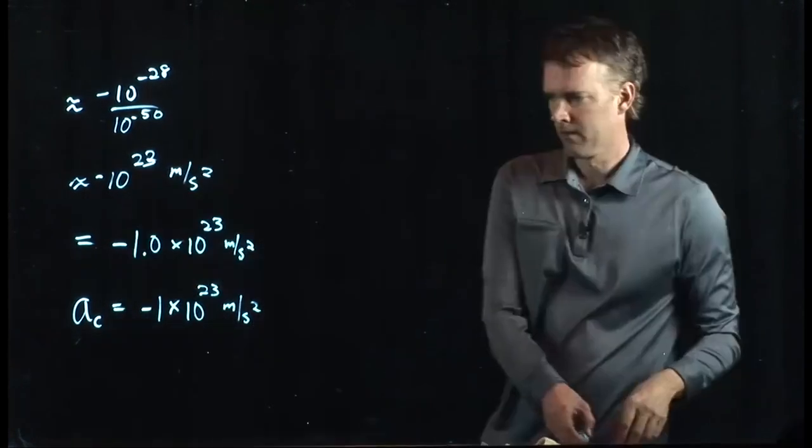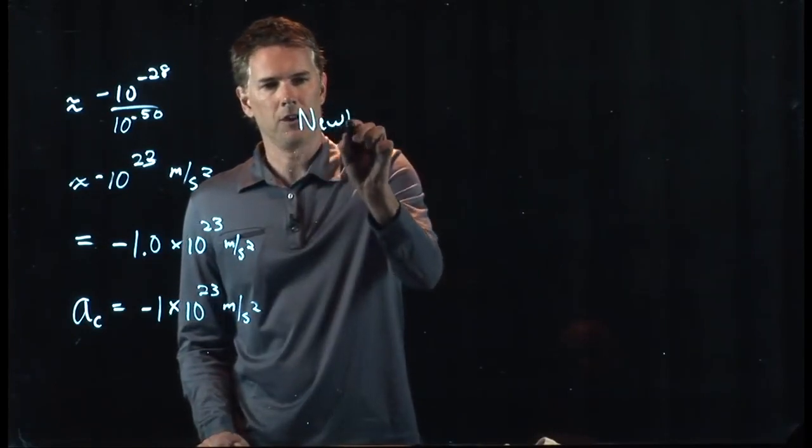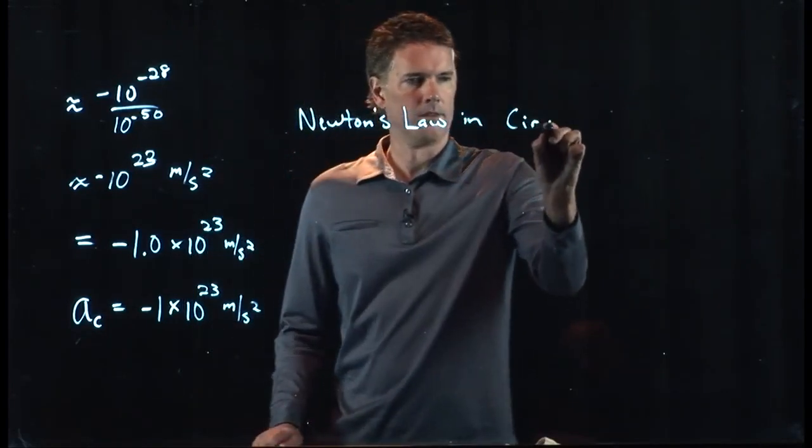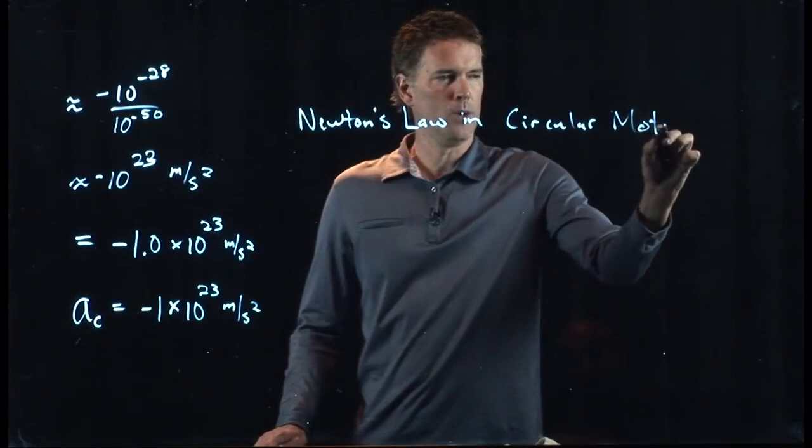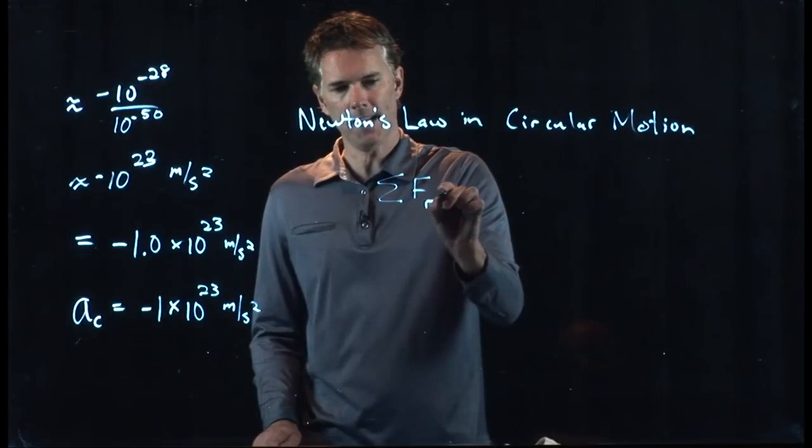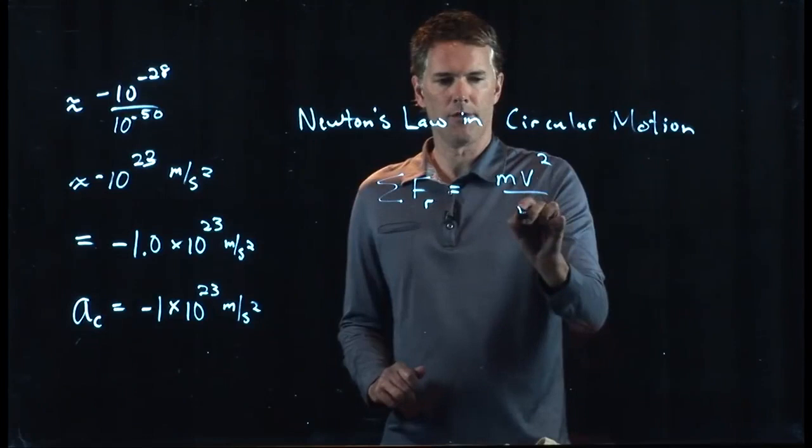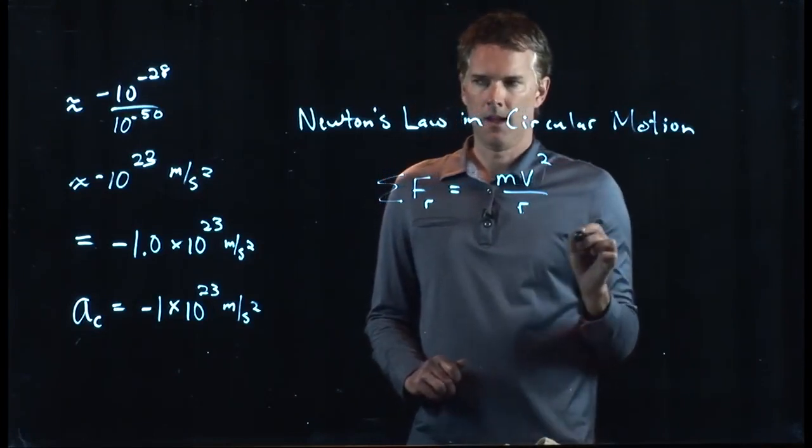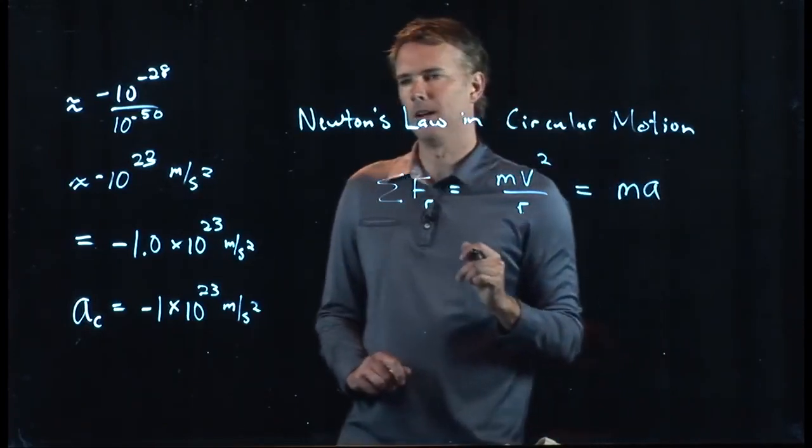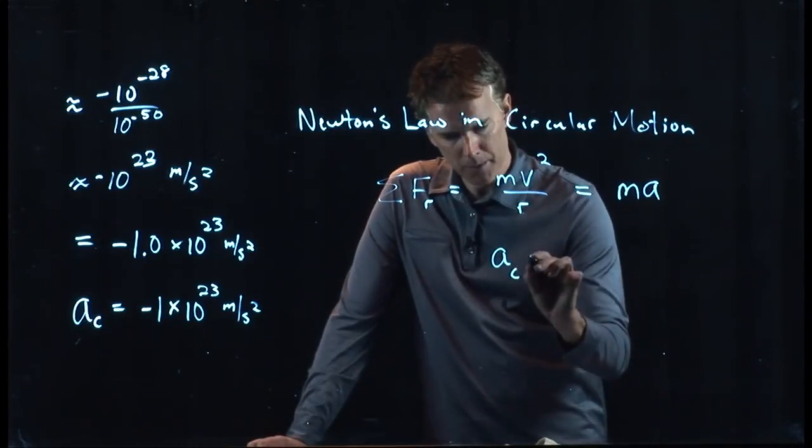What about the speed? We said that the electron is orbiting at speed v. What is that orbital speed? Let's calculate it. So Newton's law in circular motion. What did we have?